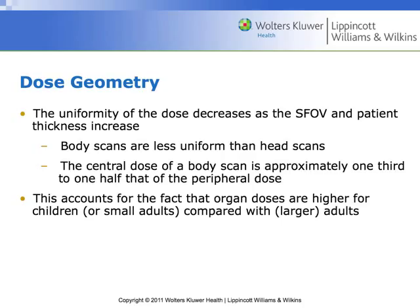As we unpack effective dose, we need to think about the dose geometry. One really important thing is that the uniformity of the dose decreases as the scan field of view and the patient thickness increase. As the area we're scanning gets bigger and the patient's body gets bigger, we're going to have things like beam hardening that occur.